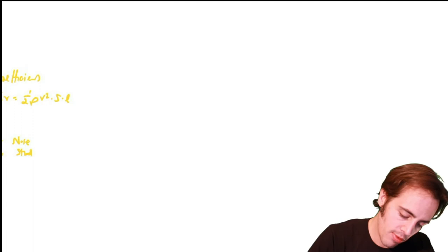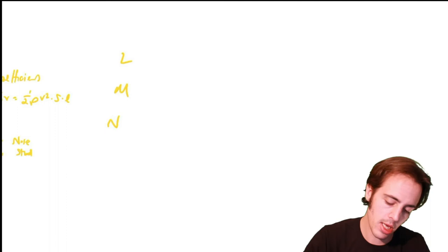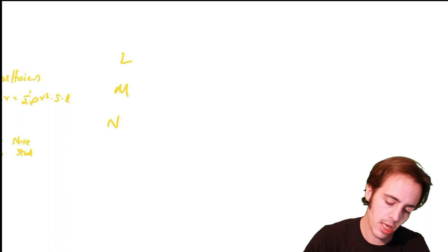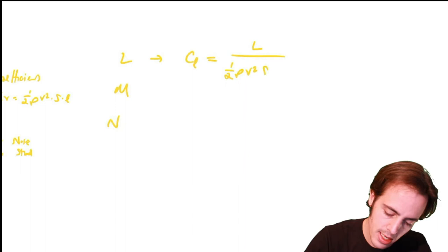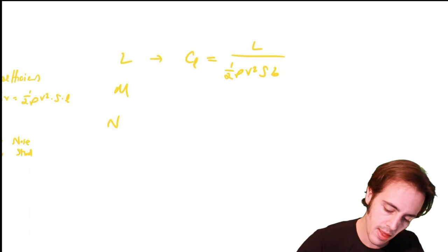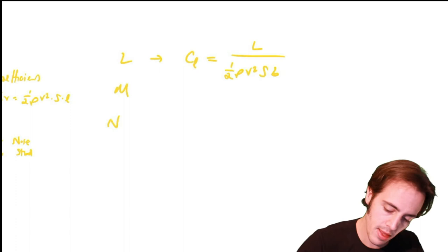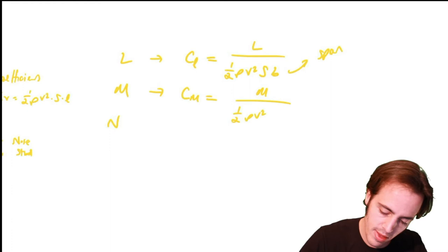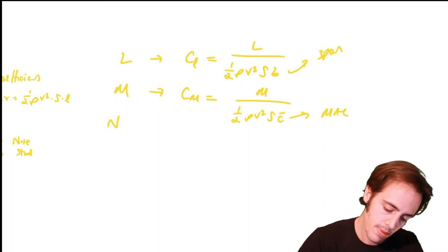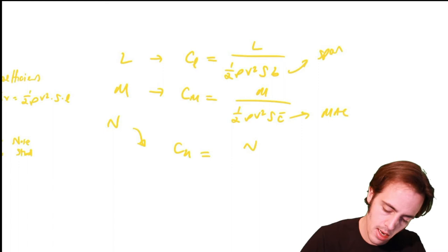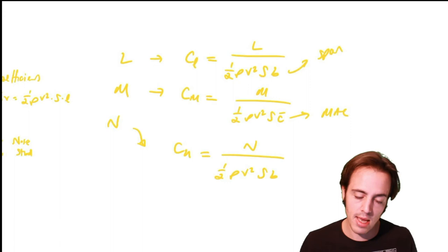The three moment coefficients are: C subscript l equals l divided by (half rho V-squared S b), where b is the wingspan — for the rolling moment. C subscript m equals m divided by (half rho V-squared S c-bar), where c-bar is the mean aerodynamic chord — for pitching moment. C subscript n equals n divided by (half rho V-squared S b) — for yawing moment. This is the part that is often very inconsistent between different texts.